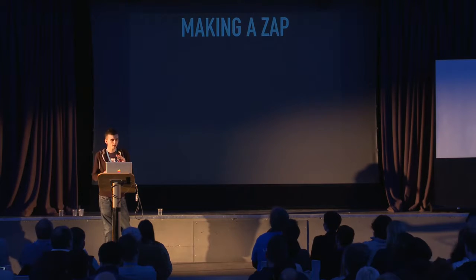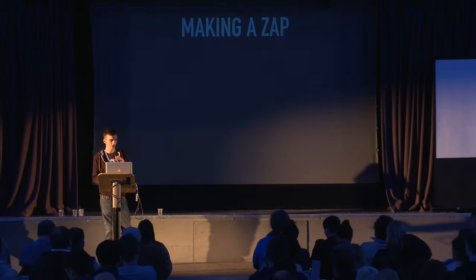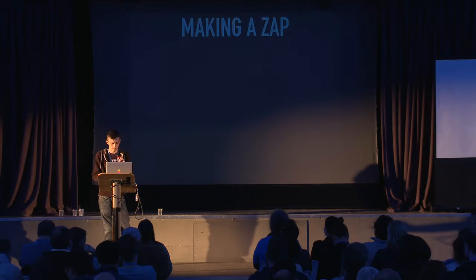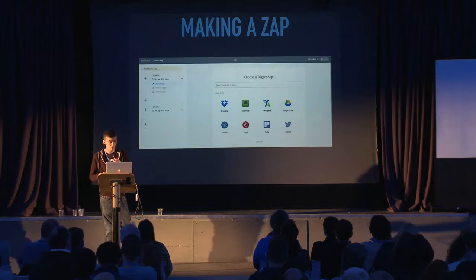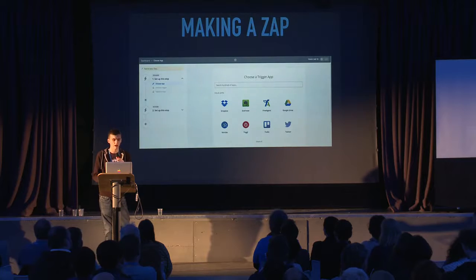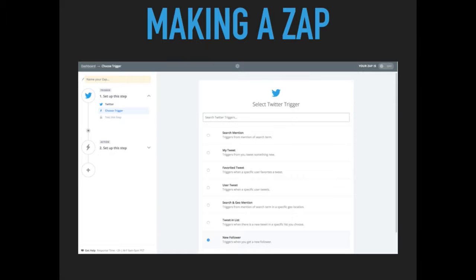I'm going to show you how easy it is to make a Zap — a Zap being an API integration from Zapier, which is what they call their API integrations. For this particular example, I'm going to set up a Zap that adds any new Twitter follower that I get to my CRM, so I can start to leverage any social media following that I get. The first thing I need to do is select the Trigger app, which in this case is going to be New Follower.